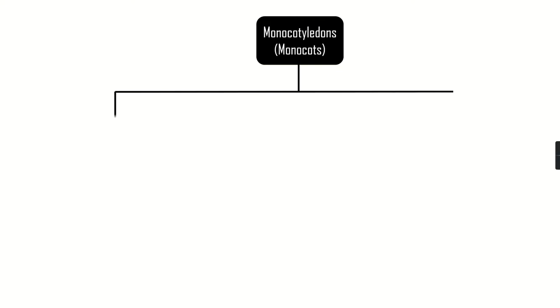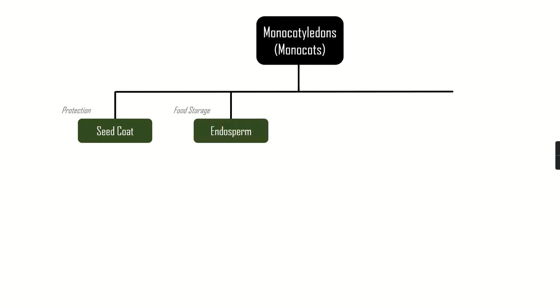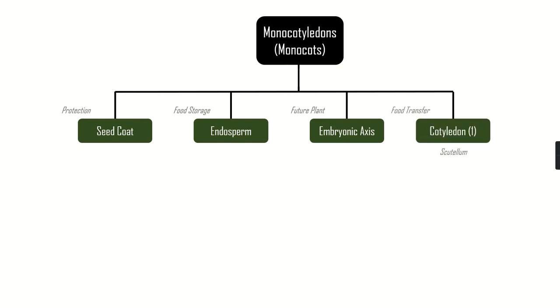The monocot seed has four parts, just like a dicot seed. The first part is the seed coat, which offers protection. The second part is the endosperm — the nutritive tissue inside the seed that acts as food storage and provides food to the seedling during germination. Then you have the embryonic axis, which is the future plant, and you have the cotyledon, which is singular in a monocot.